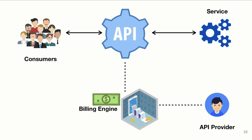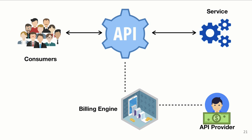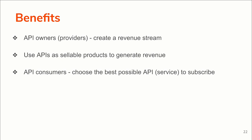Once the consumer gets the expected response from the API call, the usage data will be sent to the respective billing engine. In the billing engine the bill will be calculated based on the usage, and then the API consumer can pay the specified amount to the API owner. With this monetization feature, API consumers can view the pending bill that they have to pay at the end of their billing cycle.